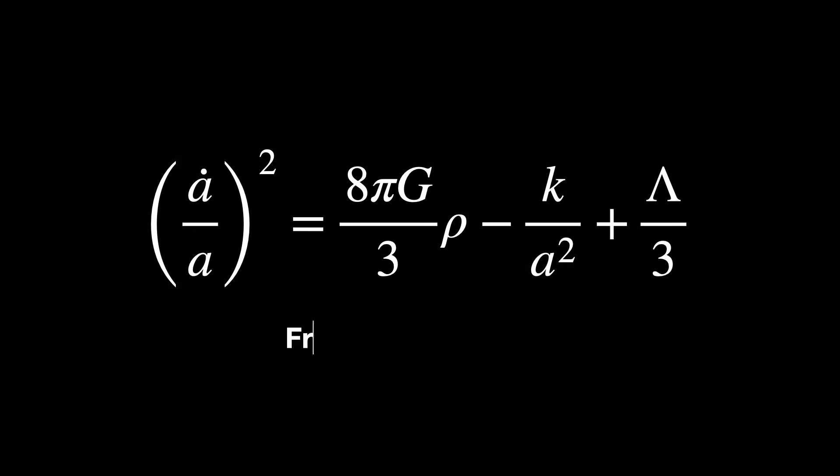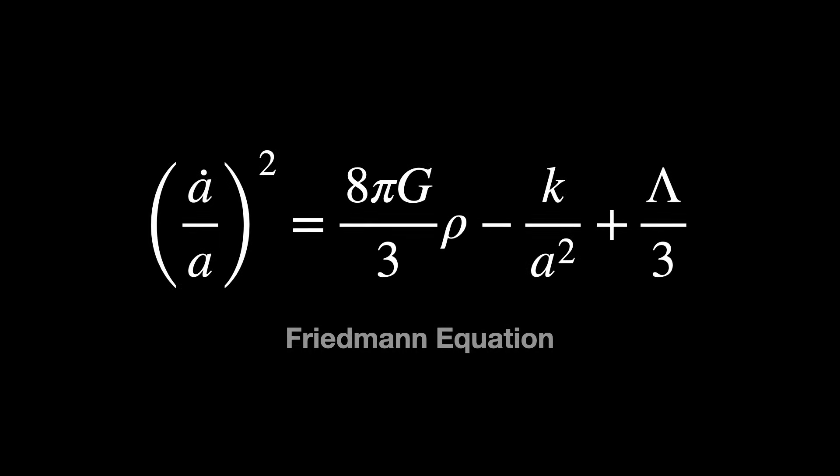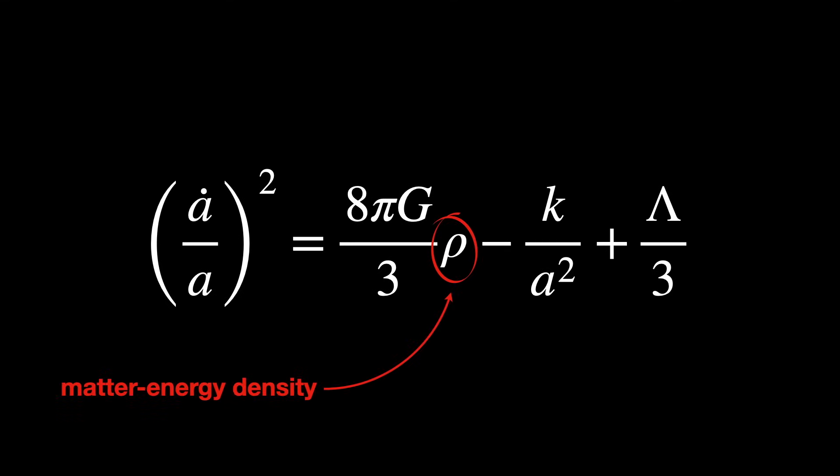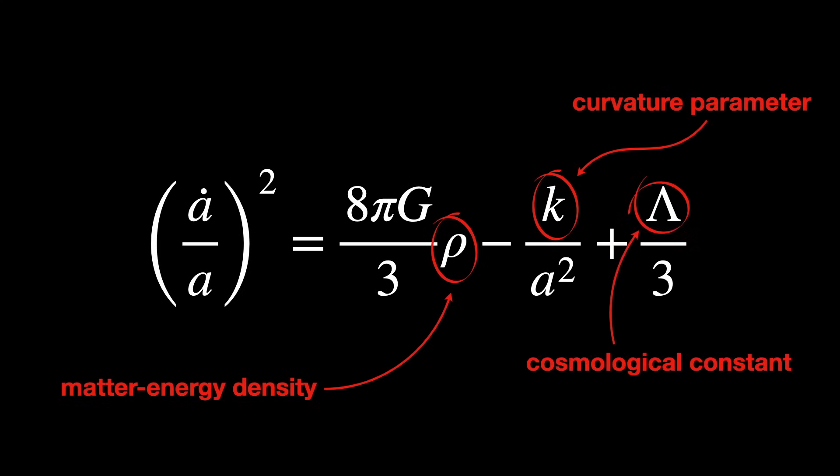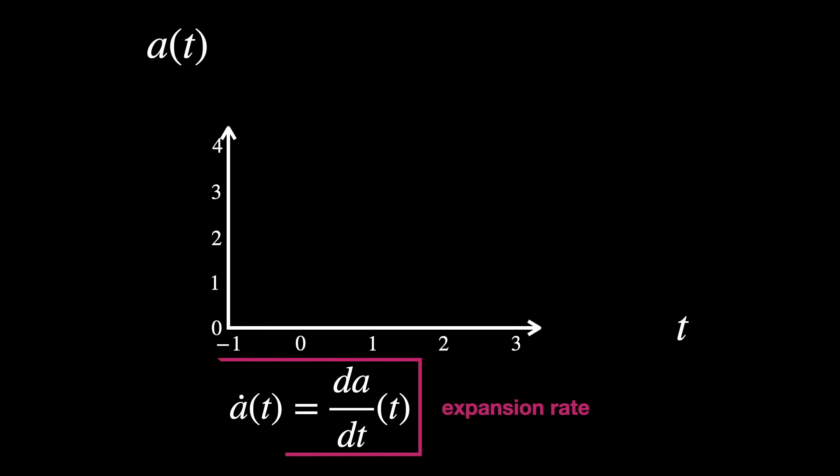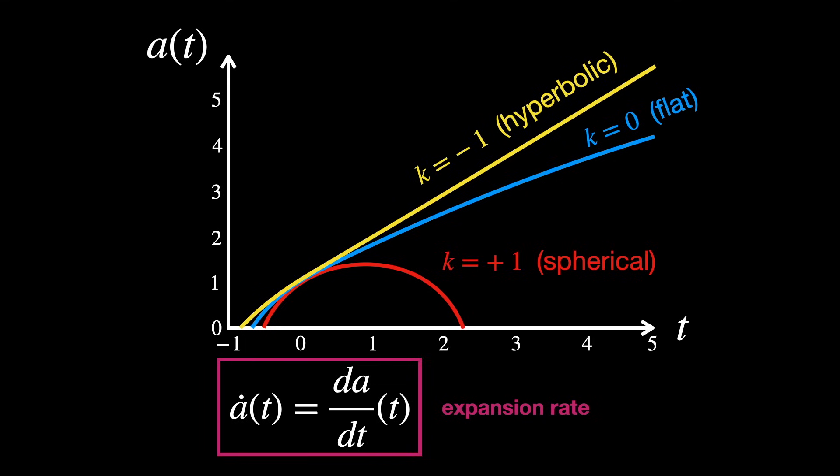This is the mathematical formula that describes the expansion of our universe. So, the scale factor changes over time. Its first derivative, or rate of change, is what we call the expansion rate of the universe.